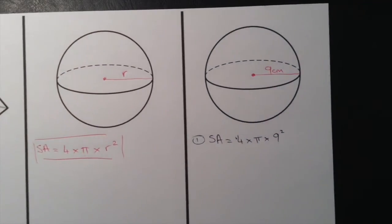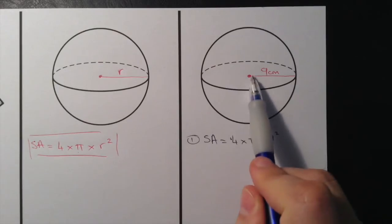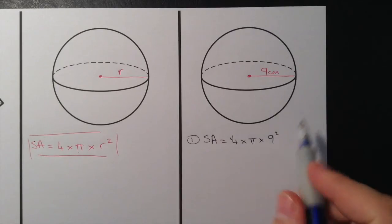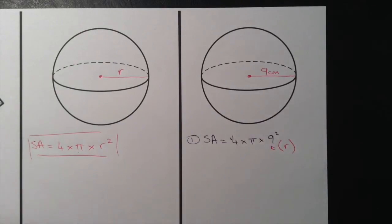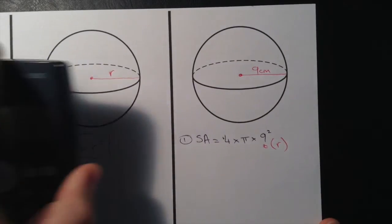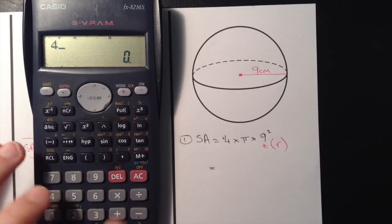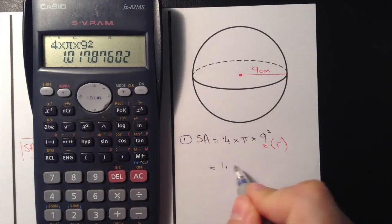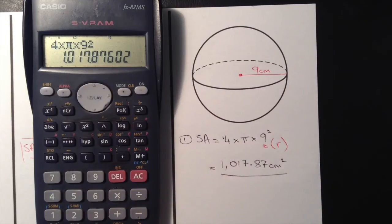Here's our example: we have a sphere where the radius is 9 centimetres — from the middle of the sphere out to one side. We write out the formula, substitute the 9 in for R, grab our calculator, and type in 4 times pi times 9 squared, hit equal, and we get an answer of 1017.87 centimetres squared. That's how simple it is.